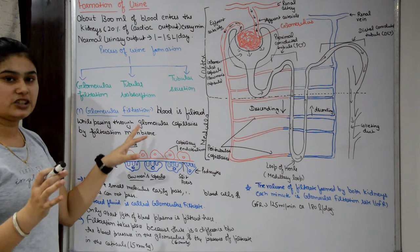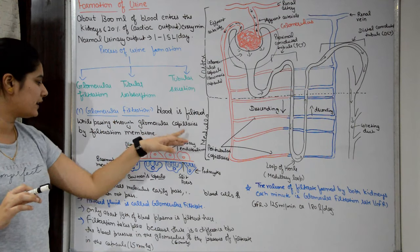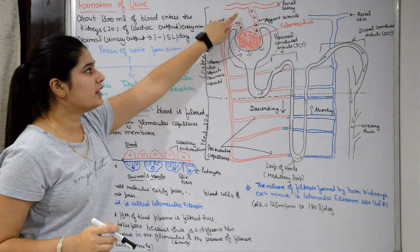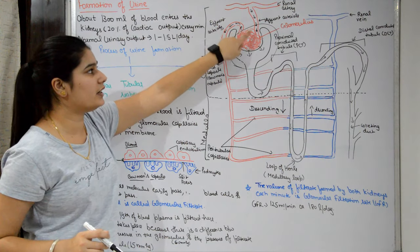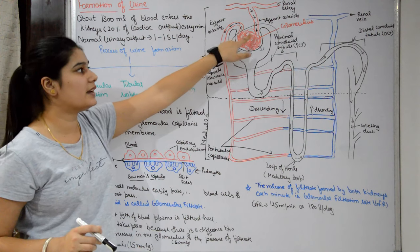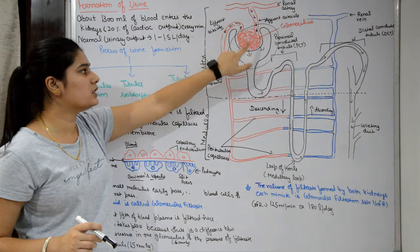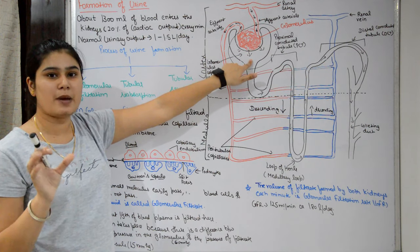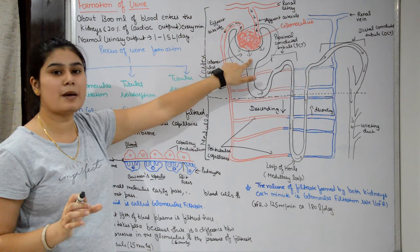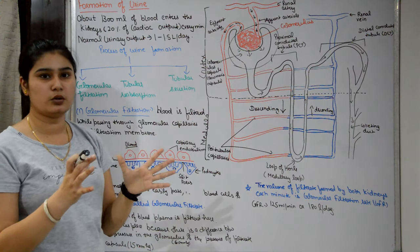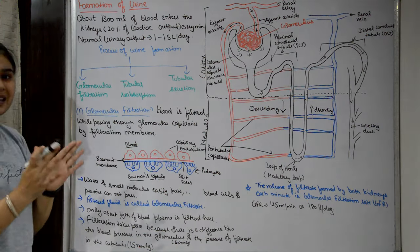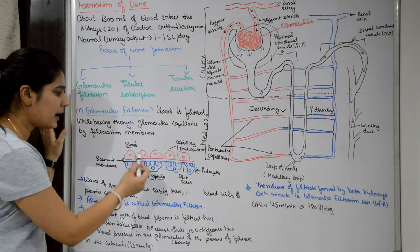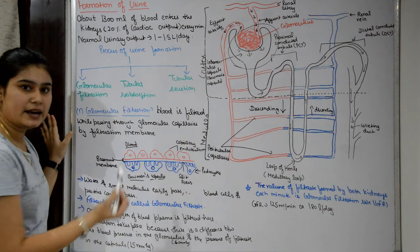In glomerular filtration, blood is filtered while passing through glomerular capillaries. Blood enters through the renal artery, and the afferent arteriole enters the nephron into the glomerulus and glomerular capsule. Under the Bowman's capsule there is a filtration membrane through which blood is filtered.